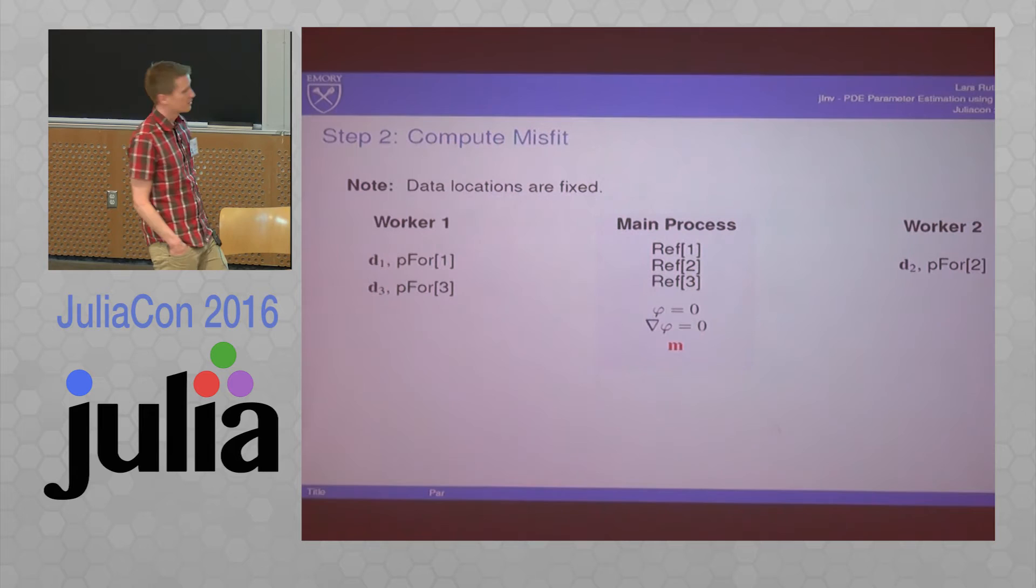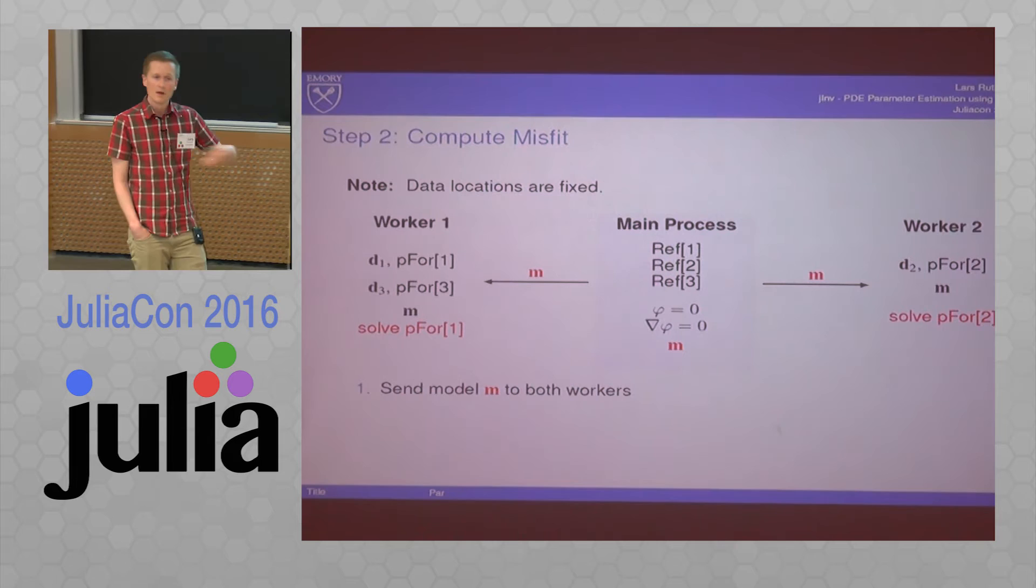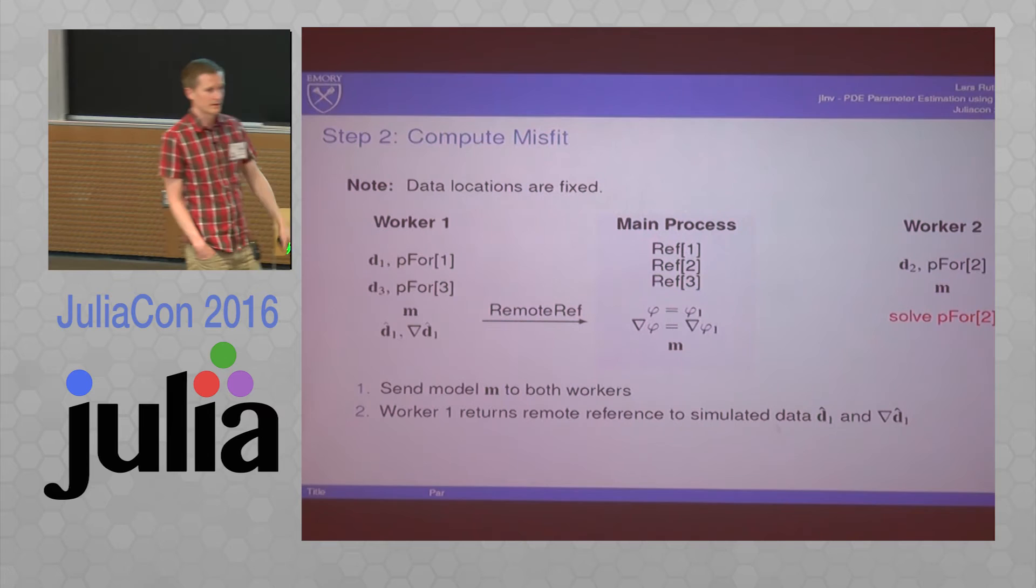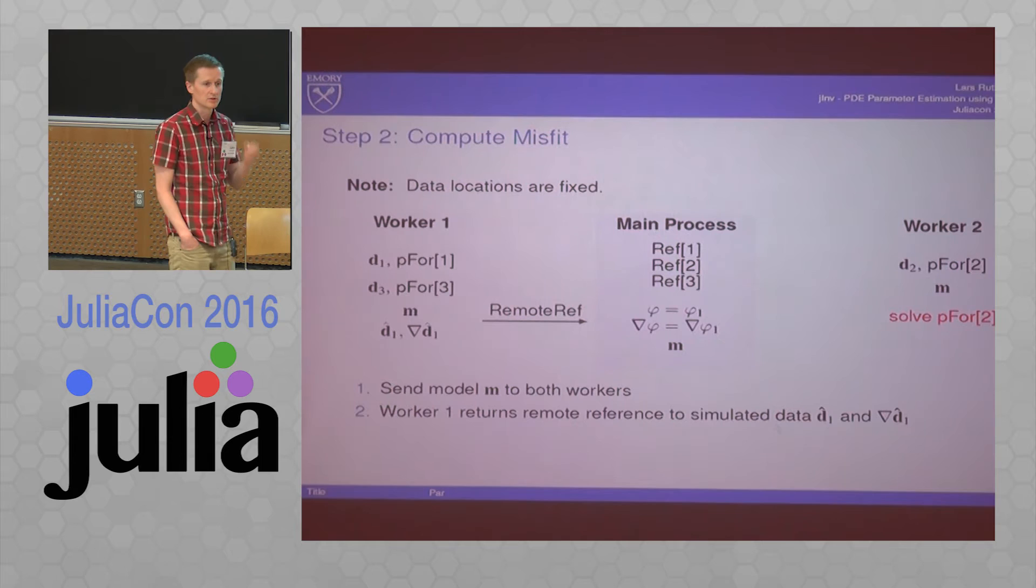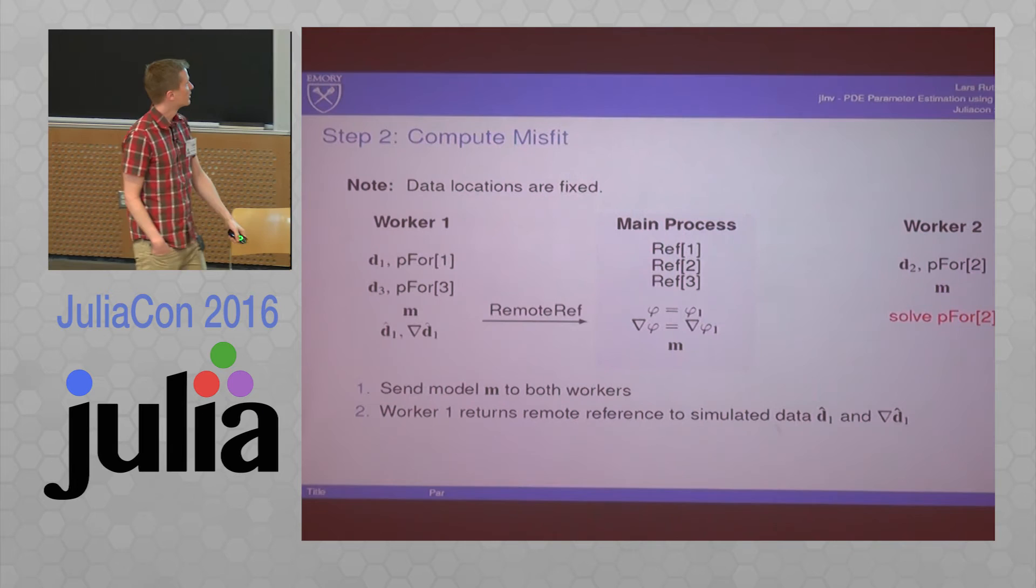Then you have the current guess for your conductivities in here on the main worker. You send them left and right. Each of them solves the forward problems using whatever method you assign, but it takes quite a long time. Again, worker one is finished earlier. So it returns the current misfit, which is a scalar, and the gradient, which is a vector, and returns remote references to the fields, so the simulations, because these also take up a lot of memory. We don't communicate them.